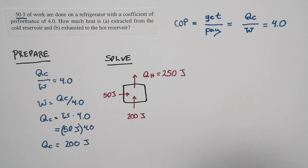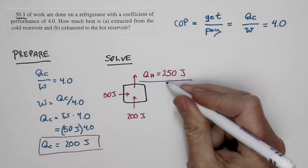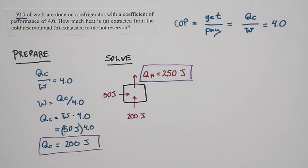So, the net result is this. For A, the energy pulled out of the cold reservoir, 200 joules. For B, the energy exhausted into the hot reservoir, 250 joules.